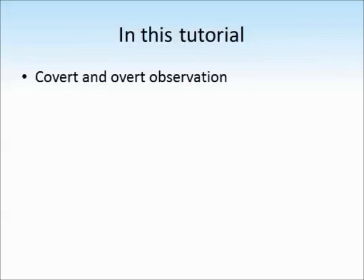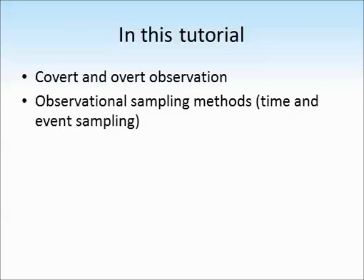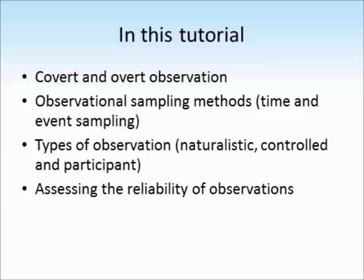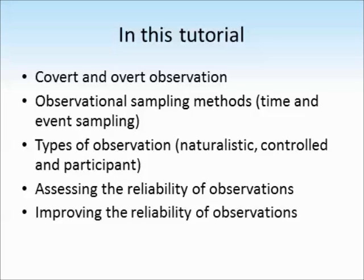In this tutorial, we're going to be looking at covert and overt observation. We'll take a look at observation sampling methods, which are time sampling and event sampling. We'll also look at the different types of observation which we can use: naturalistic, controlled and participant observation. We'll talk about how we assess the reliability of observations, and lastly, how we can improve the reliability of observations.